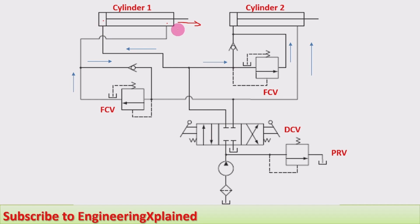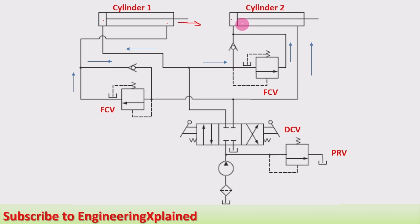The complete extending of cylinder one will be taking place. After the complete extending, the pressure will be built up in the circuit. Due to that, there is a non-return valve — in this direction there is no flow — and this sequencing valve or flow control valve will be actuated by the pressure in the line. That will allow the flow of fluid at higher pressure, and then it goes to the piston end side of cylinder two. Then the extending of cylinder two takes place after the extending of cylinder one.